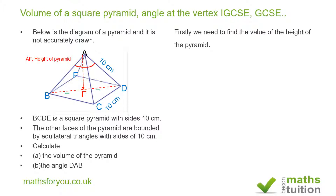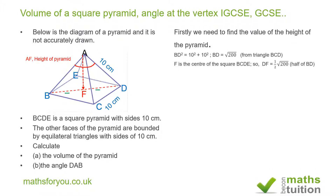Looking at the right-angle triangle BCD: BD squared equals 10 squared plus 10 squared, which is 200. Taking the square root of both sides, BD equals the square root of 200. DF is half of BD, so DF equals one half of the square root of 200.